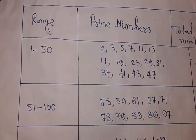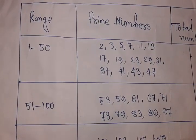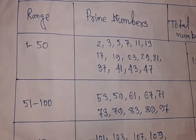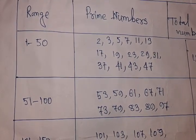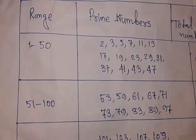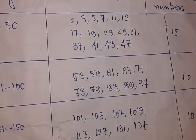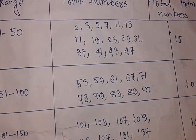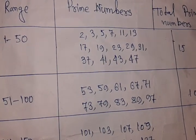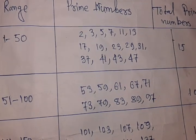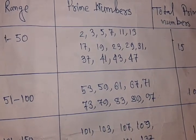Hi friends, today we discuss how many prime numbers there are from 1 to 200. So let's start. First, 1 to 50. There are 15 prime numbers: 2, 3, 5, 7, 11, 13, 17, 19.